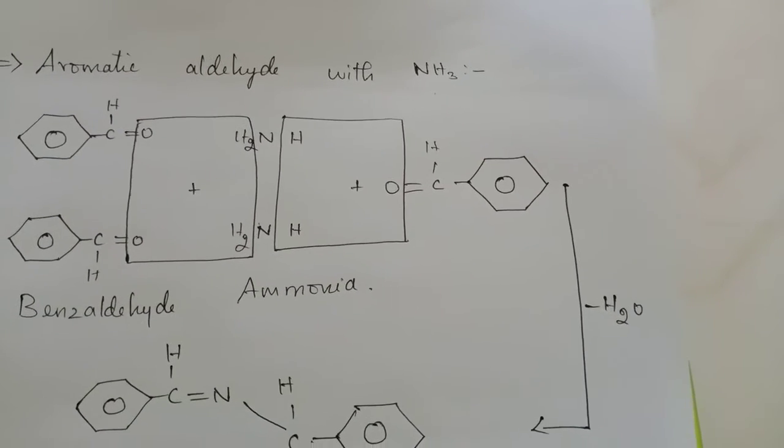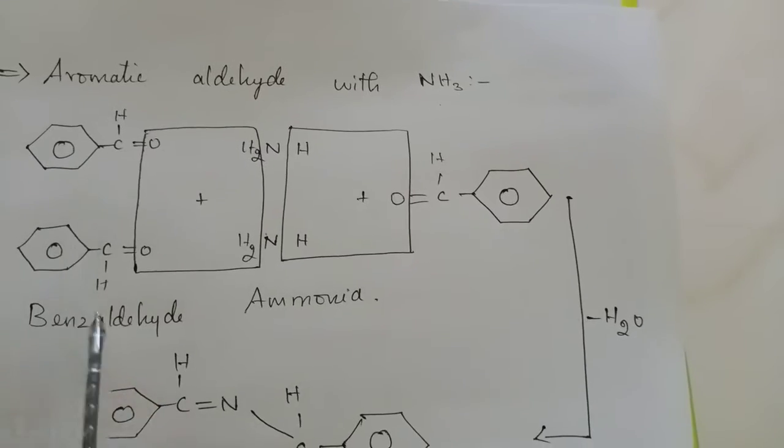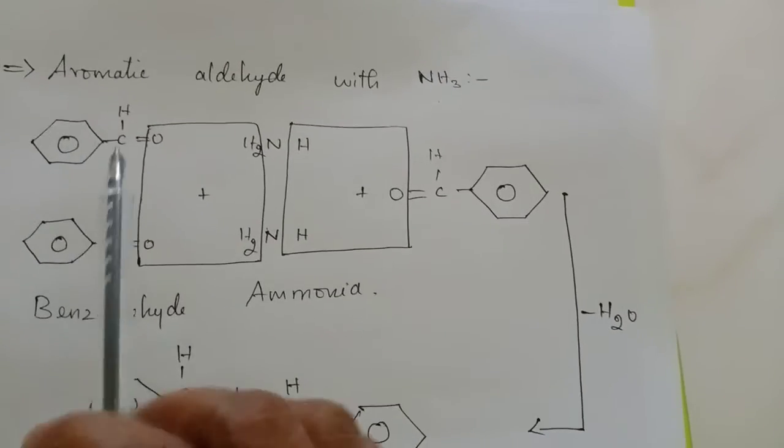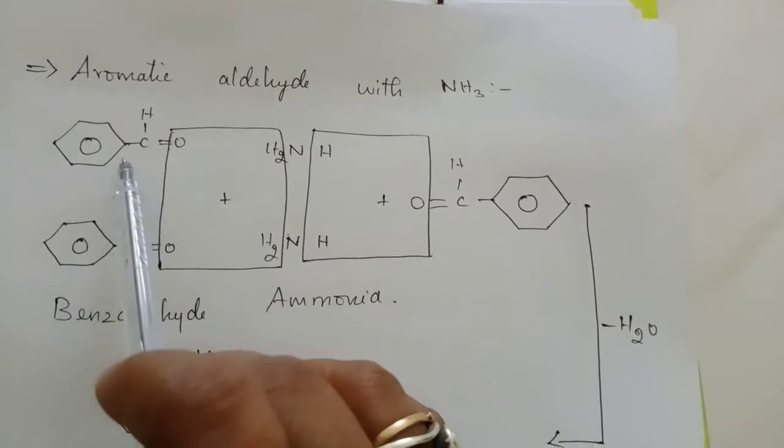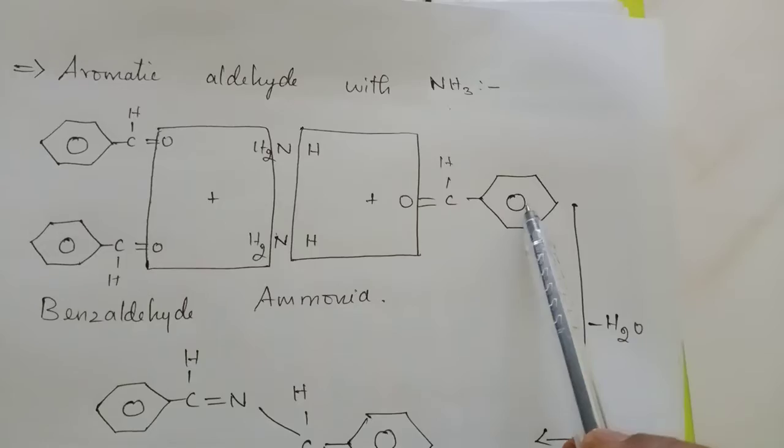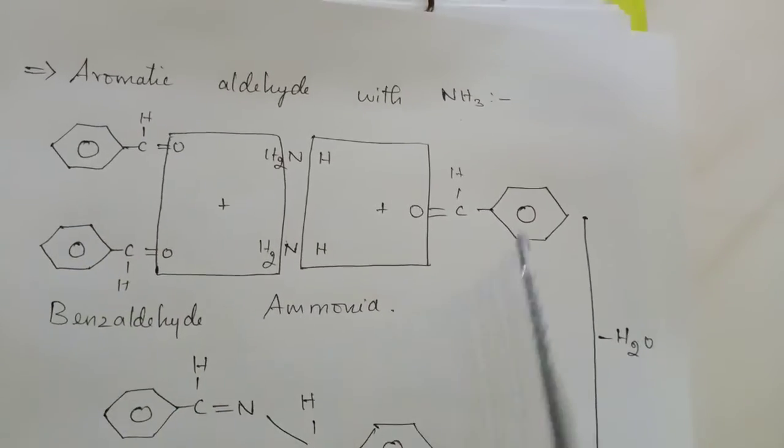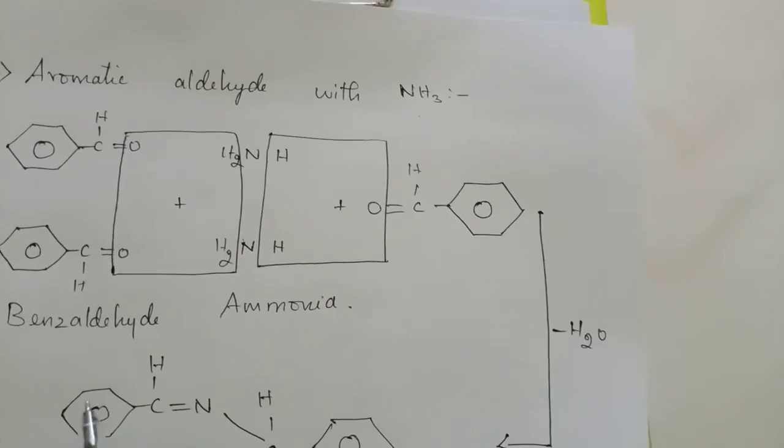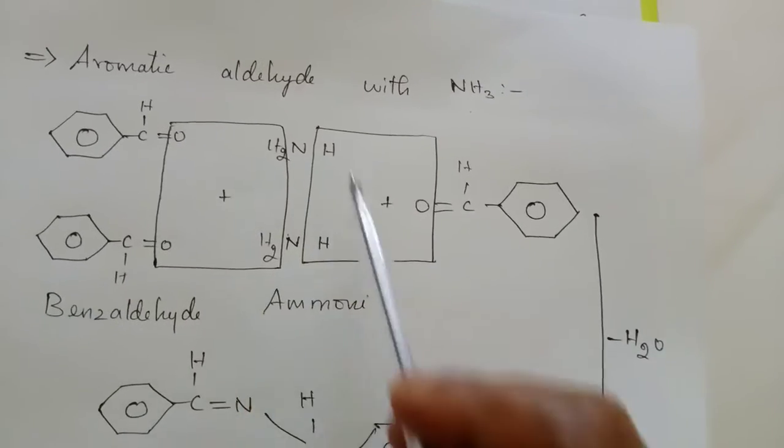Now with aromatic aldehyde with NH3, aromatic aldehyde in the sense, we are talking about benzaldehyde. See the reaction carefully. We are using three moles of benzaldehyde, one, two, three. They have displayed like this so that you will understand how the bonding takes place. So three moles of benzaldehyde reacts with ammonia.